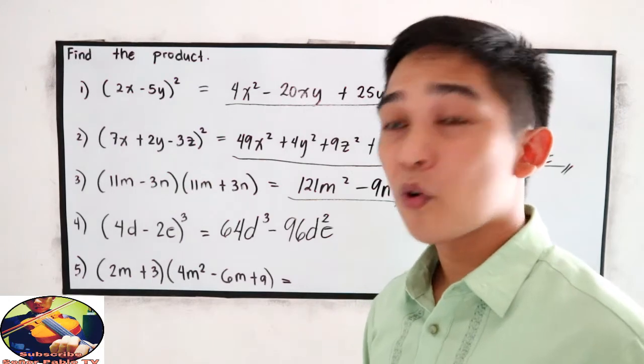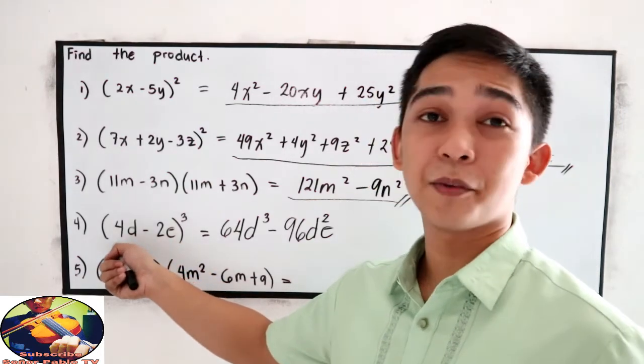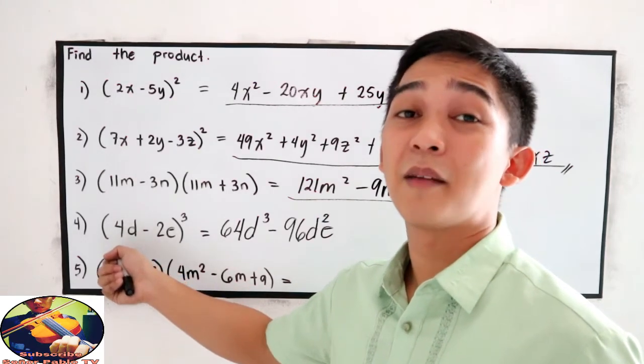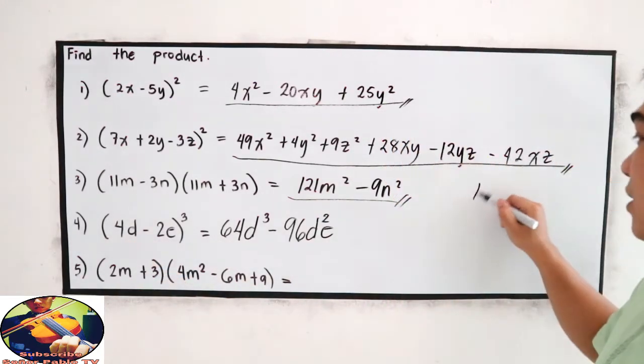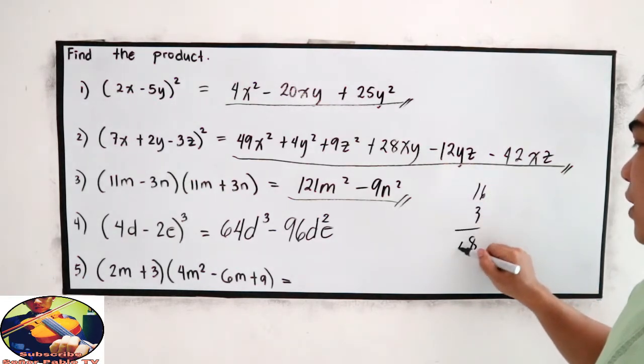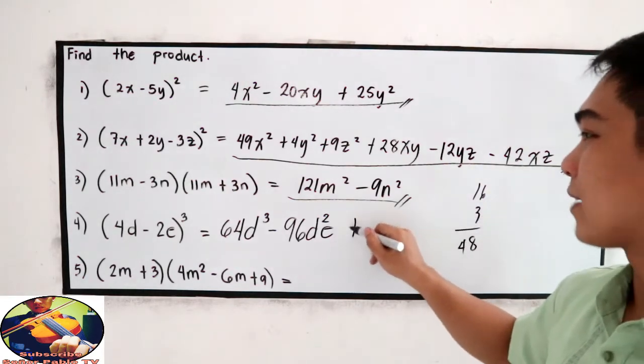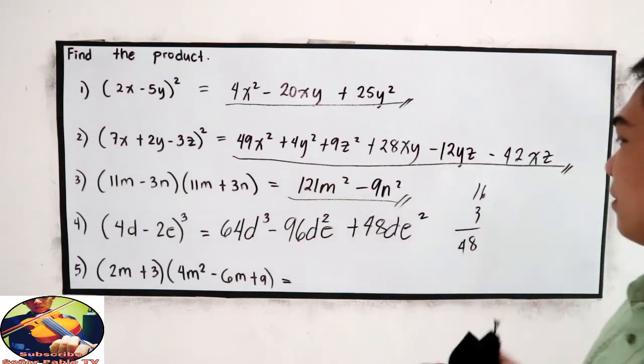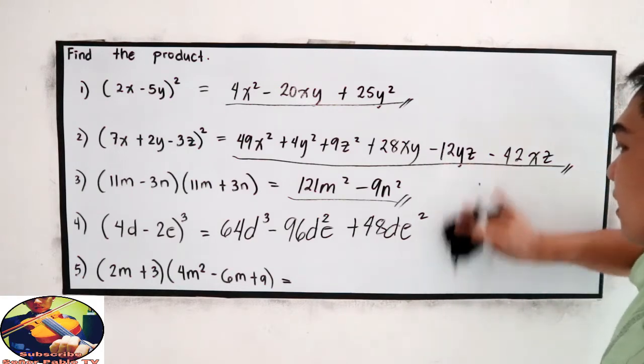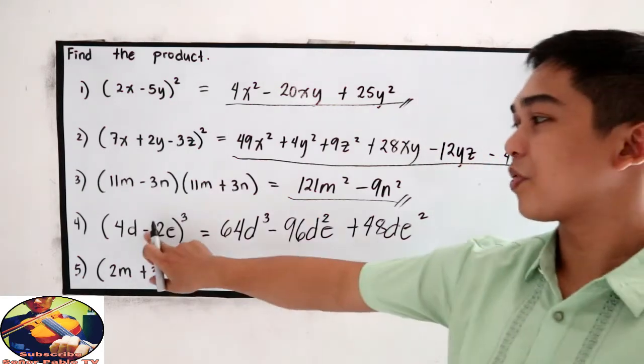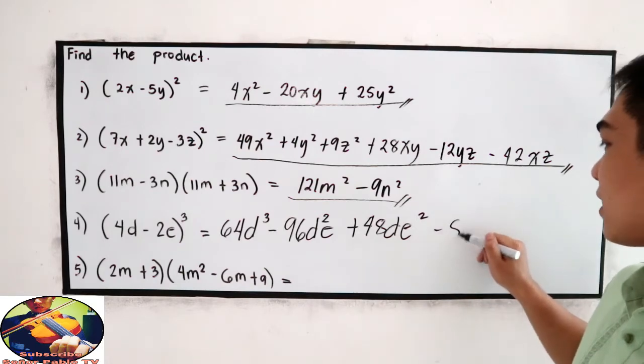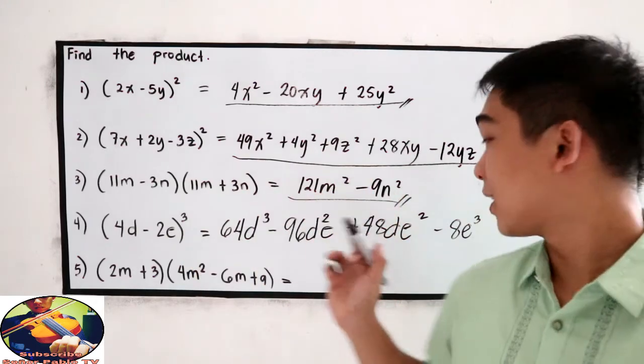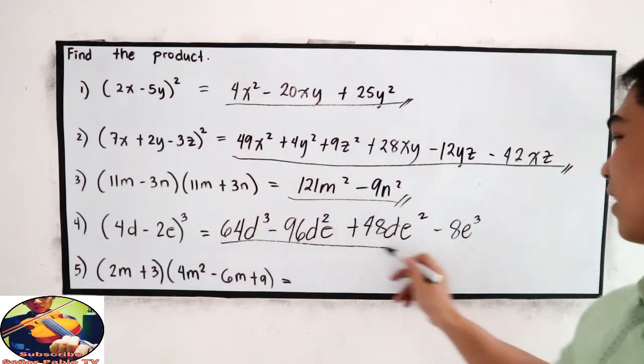Next, square the second term. So 2 squared is 4 times the first term. 4 times 4 is 16. 16 times 3. 16 times 3. So 16 times 3 is 48. So positive 48de squared. And lastly, cube the second term. So negative 8e cubed. 2 times 2 times 2. Our product.